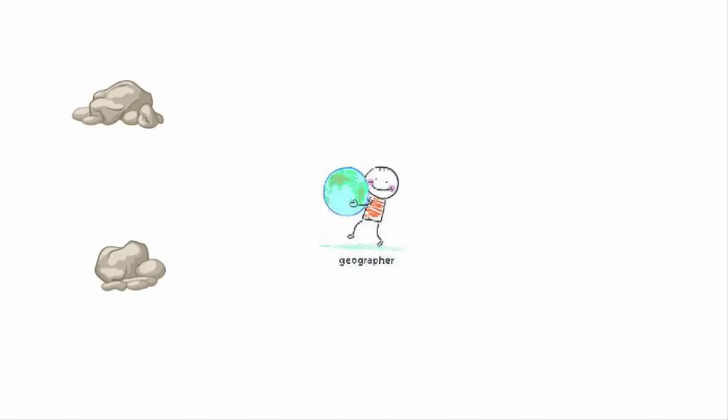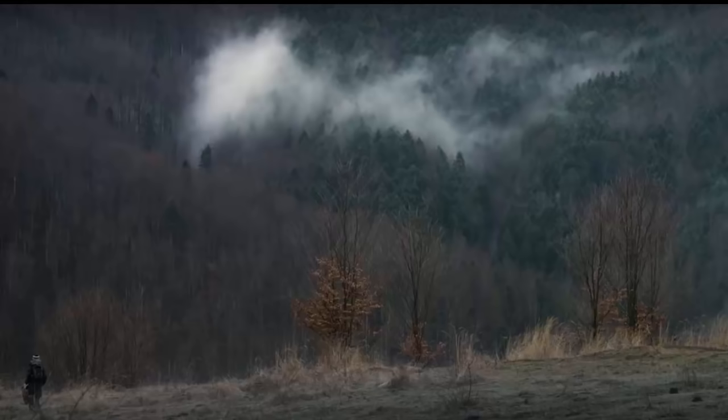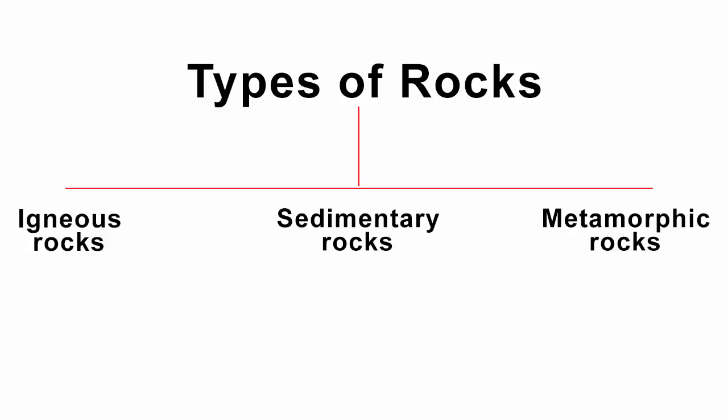If you become a geographer, you'll need a basic understanding of rocks, because that's how you'll get to know the landform and the earth's surface. Rocks are categorized under three families on the basis of their mode of formation. They are igneous rocks, sedimentary rocks, and metamorphic rocks. Let's understand each one of them.